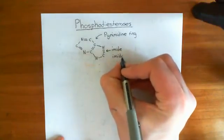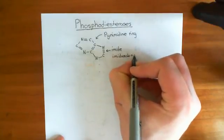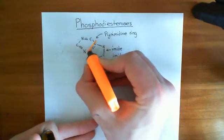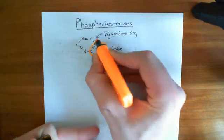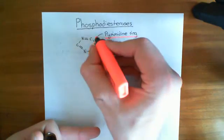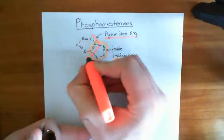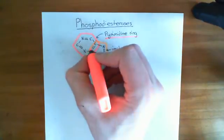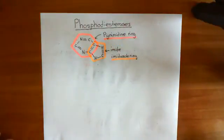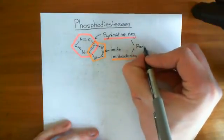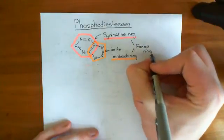An imidazole ring is a five-membered ring. The imidazole ring is this five-membered ring here, and the pyrimidine ring is this six-membered ring. You can see that both rings share the same atoms — there's an overlap. When you have a pyrimidine ring connected to an imidazole ring in this way, that is known as a purine ring. The entire structure is known as a purine ring, which is why adenine is said to be a purine.